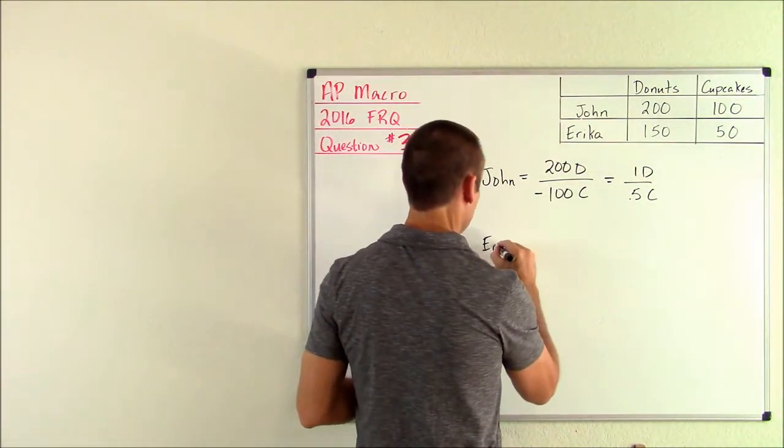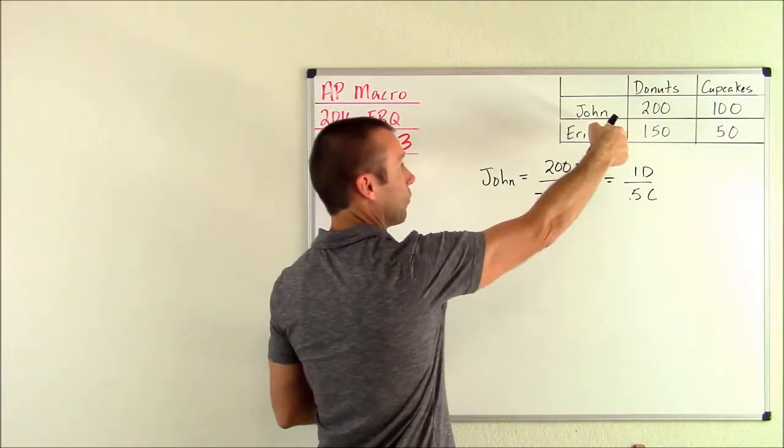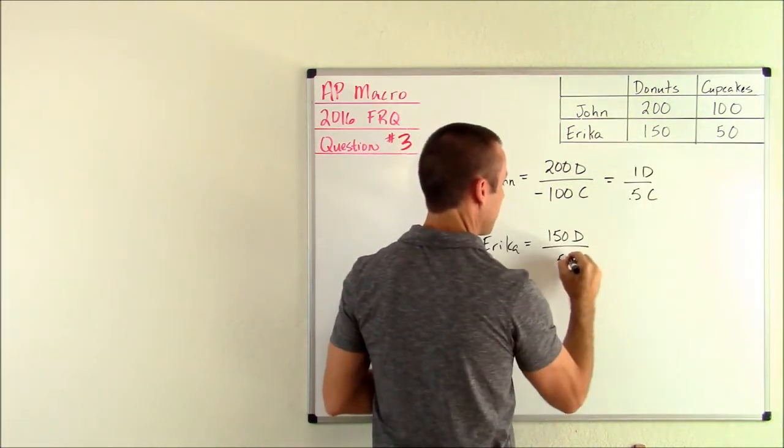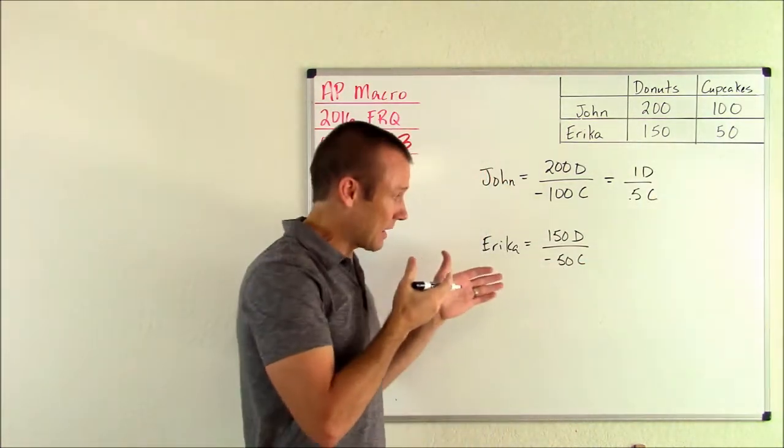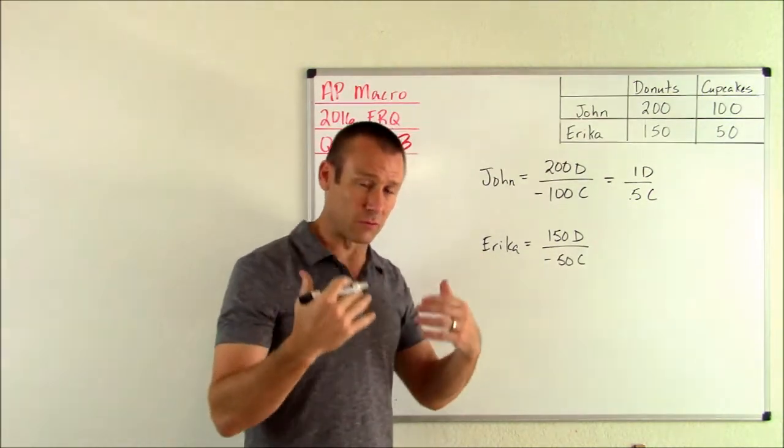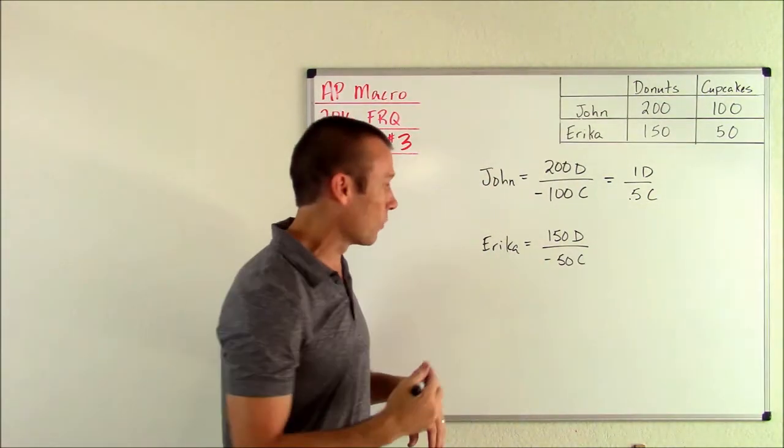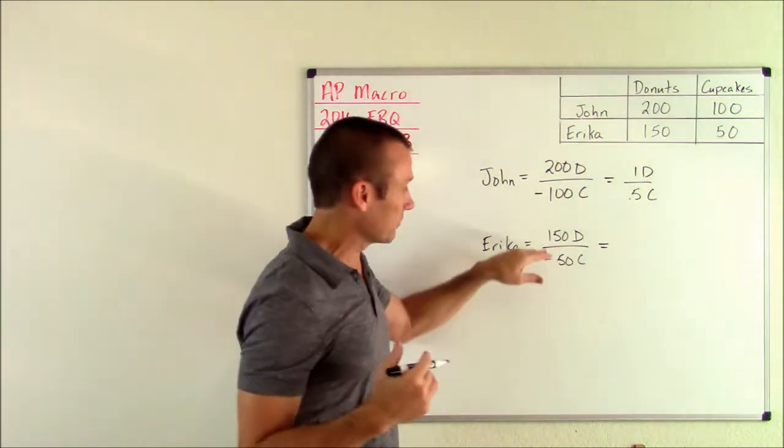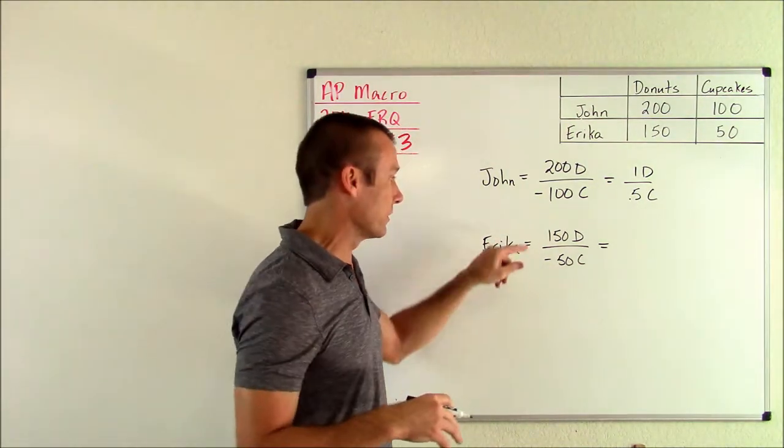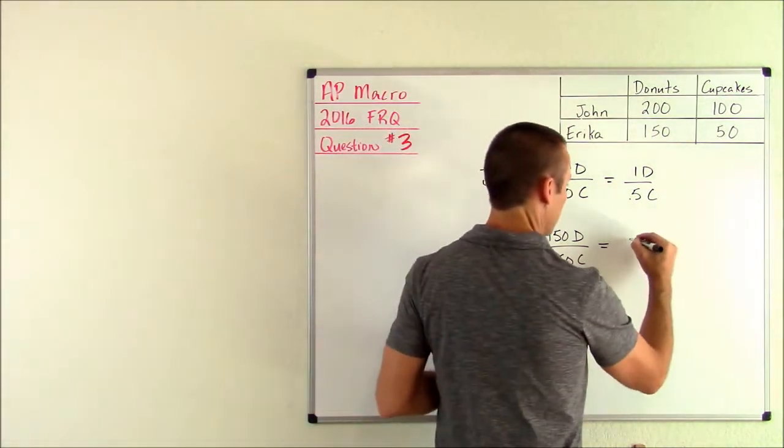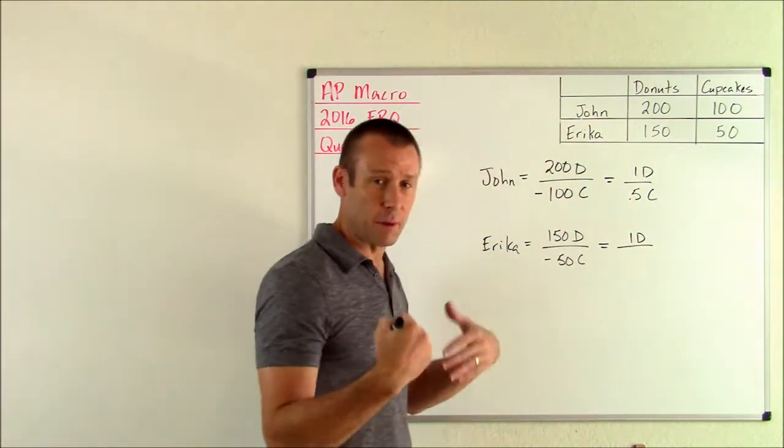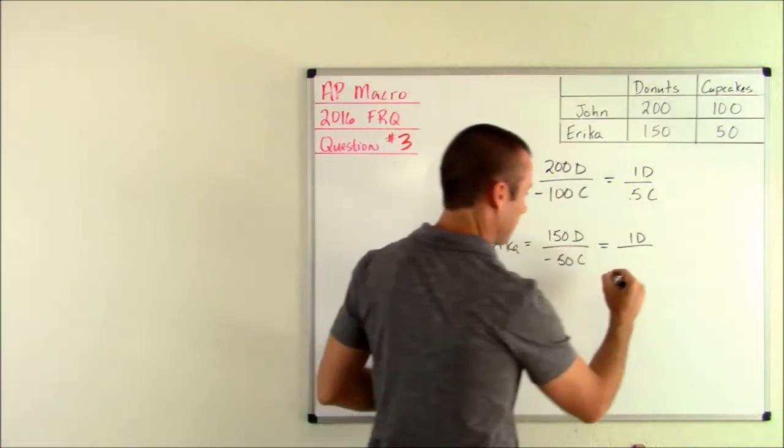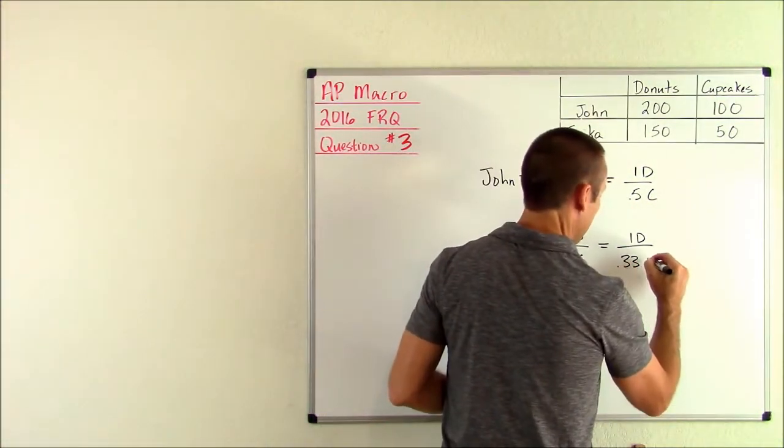As for Erica, I've got 150 donuts over 50 cupcakes. That is opportunity cost, but I just want to give it in terms of one donut to make it really easy to compare back and forth. I'm going to divide both of these by 150. 150 by 150 is one donut. 50 divided by 150 is one-third, so I can put 0.33 cupcake.